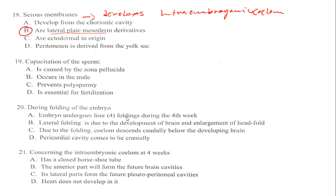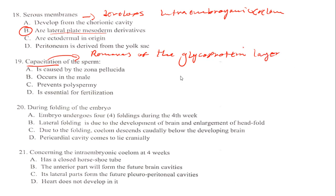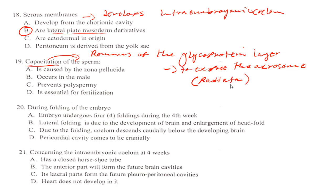Capacitation of the sperm is just the removal of the glycoprotein layer to expose the acrosome. When the sperm undergoes capacitation, it removes the glycoprotein coat found on the acrosome region. This normally happens at the corona radiata. All of this happens to make sure that fertilization can take place.